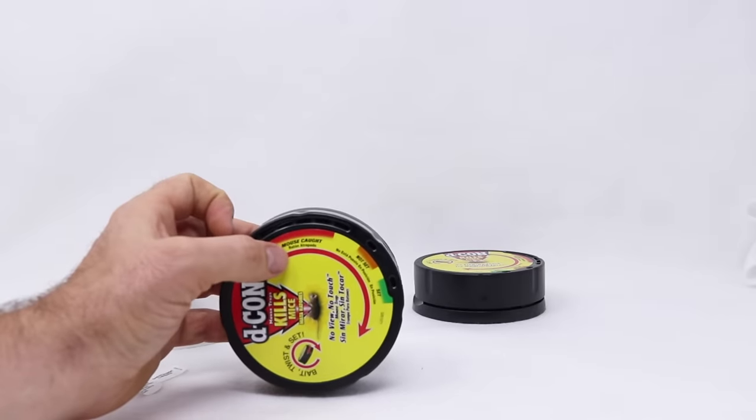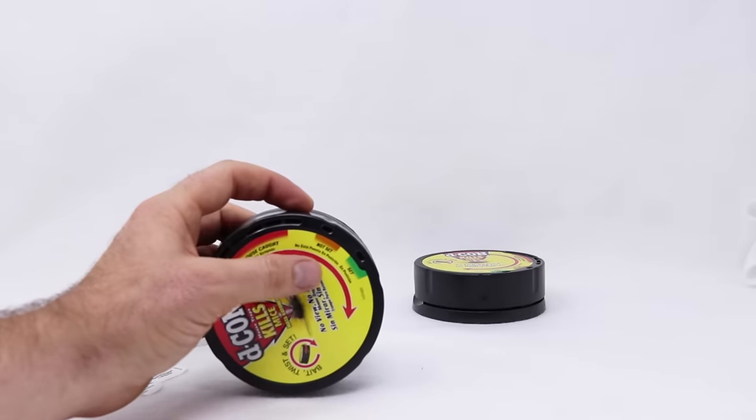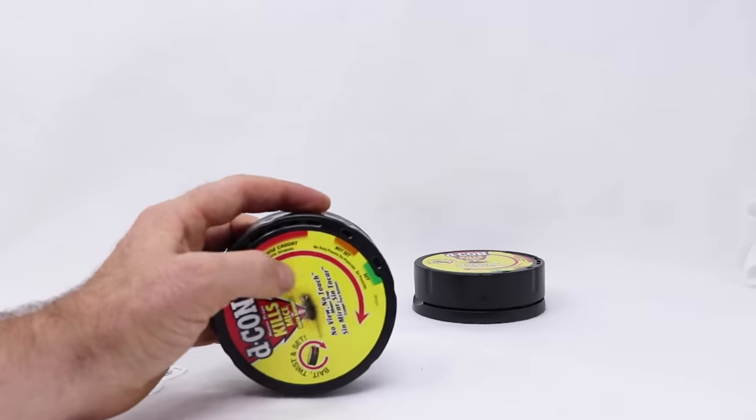Now on top there's indicators. It says mouse caught, not set, and set. Set is green, not set is orange, and red is caught.